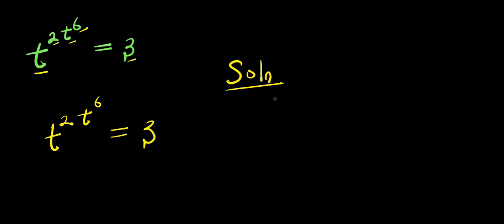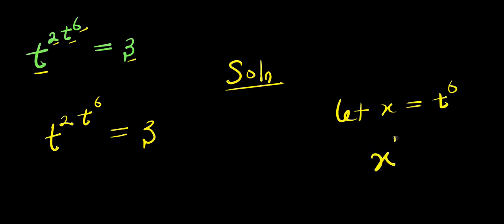I can start by saying: let x equal t to the power of six. Now at this point I need to isolate t from here. So in order to isolate t, I will raise each part of this equation to the power of one over six. So x to the power of one over six equals t to the power of six, raised to the power of one over six.